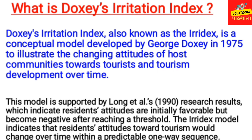Doxy's Irritation Index is a concept given by George Doxy in 1975. It shows the irritation level of local communities due to tourism activities, and illustrates the changing attitudes of host communities to tourists and tourism development over time. This model is also supported by Long Atoll in the 1990s, which indicates that residents' attitudes are initially favourable but become negative after reaching a threshold.